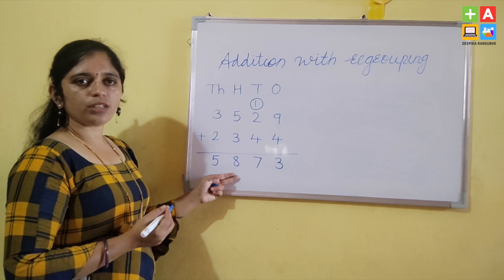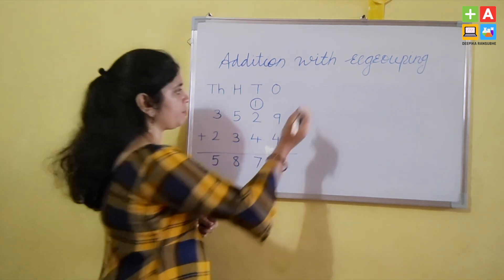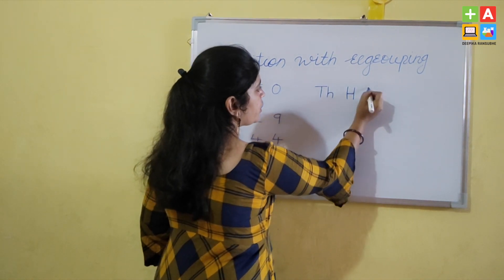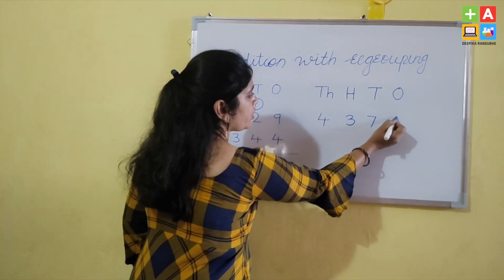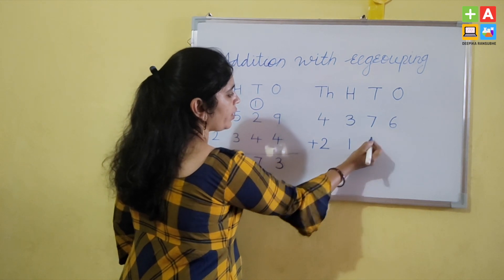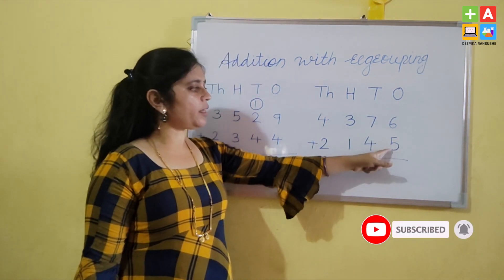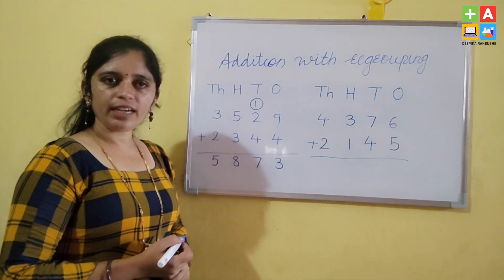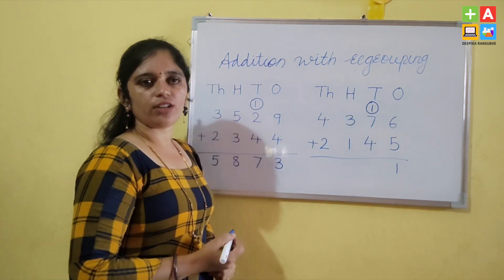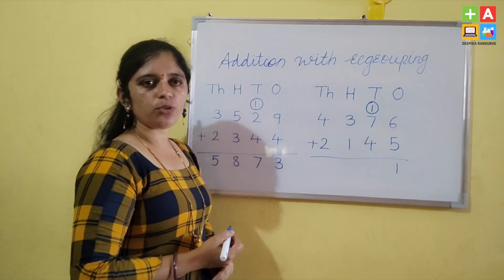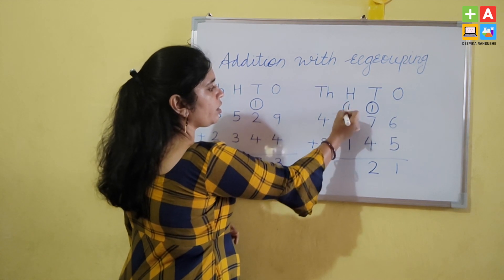Now I will set up the 1000, 100, 10, and 1 columns again. I am taking the numbers 4,376 plus 2,145. Using finger marks, add 6 and 5: 6 plus 5 equals 11. Write down the number 1 at the bottom and carry the number 1. So 7 plus 1 is 8, and 8 plus 4 is 12. Write down the number 2 at the bottom and carry the number 1 to the 100th place.